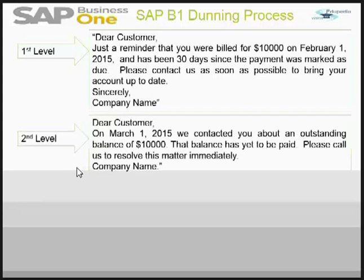If even after 30 more days the customer does not respond, the company sends a second letter reminding the customer that it has now been 60 days and an outstanding balance of $10,000 has yet to be paid, asking them to call or write to resolve the matter immediately. When writing a dunning letter, you want to maintain professionalism, treating your client well and appealing to their better nature.